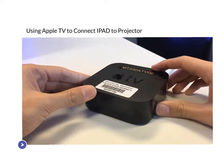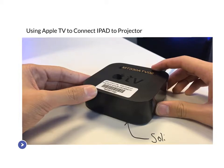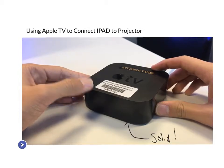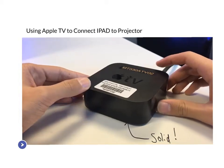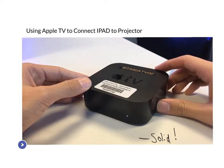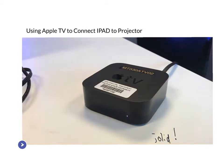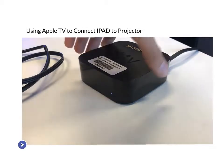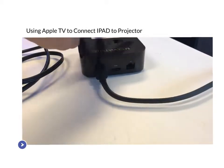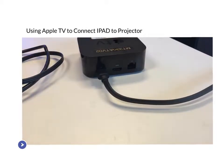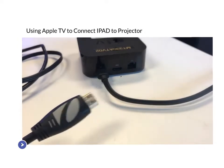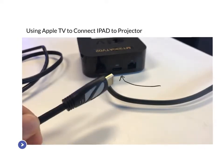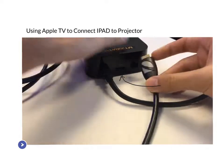Once you get it plugged in, you'll see a blinking light. You've got to wait for it to be a solid white light — that means it is good to go. Once you've got your solid white light, you can plug in the HDMI cable. Find your HDMI cable and plug it into the back of the Apple TV.